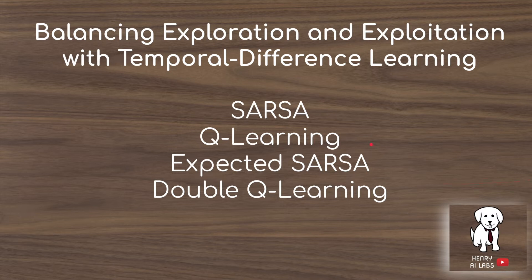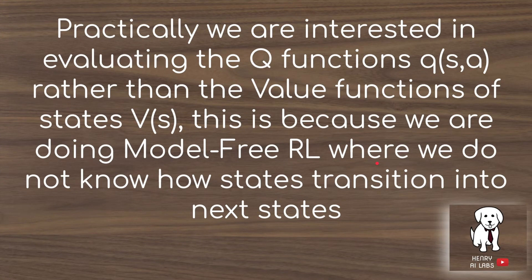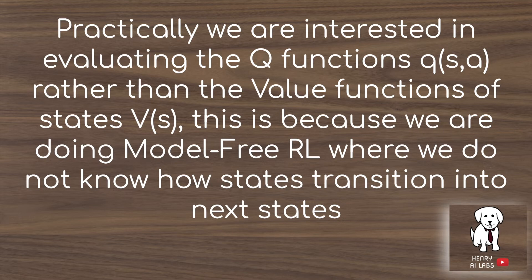Now that we're learning from experience, we need to balance exploration and exploitation. The algorithms for this in temporal difference learning are SARSA, Q-learning, expected SARSA, and double Q-learning. In these cases we evaluate Q functions Q(S,A) rather than value functions V(S), because we're doing model-free reinforcement learning without access to the dynamics function P(S prime, reward | state, action). Without knowing how states transition, we evaluate state-action pairs, which gives us more control and lets us improve our policy.